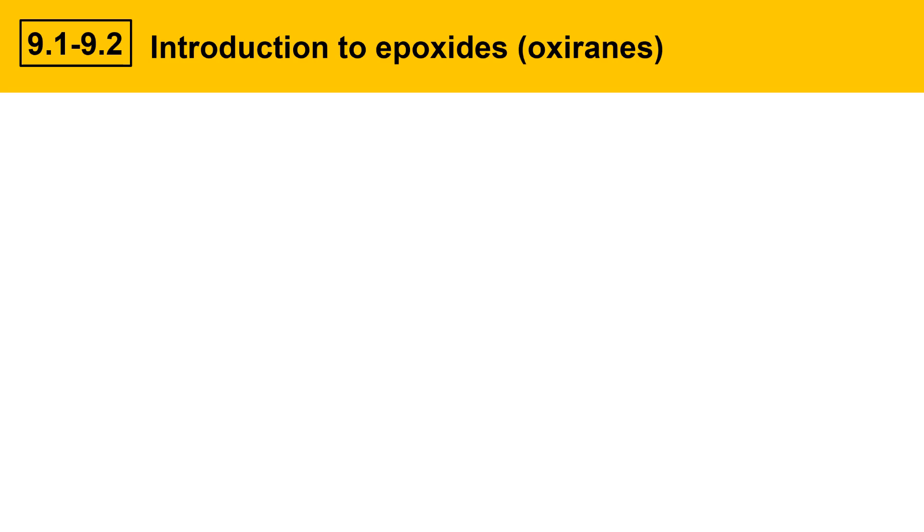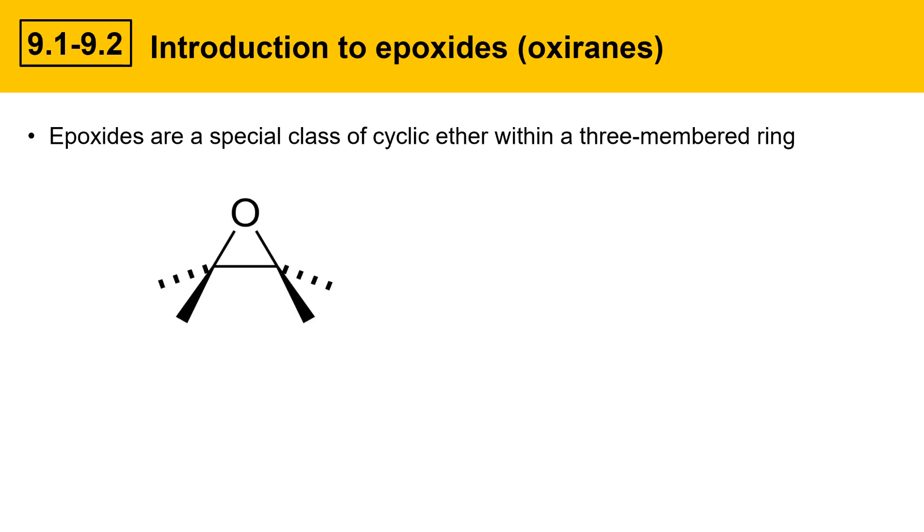Next, we'll look at epoxides, also called oxiranes. Epoxides are actually just a special class of cyclic ether that have a three-membered ring. Here's the structure of an epoxide. You can see the oxygen within the three-membered ring and substituents on either side.